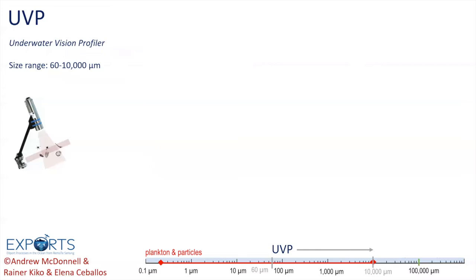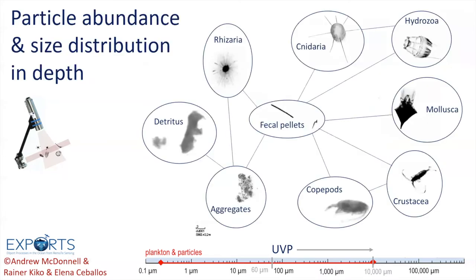Moving to larger particles in our tour, our next technique is a high-resolution underwater camera, the Underwater Vision Profiler, also known as the UVP. This camera counts individual particles larger than 60 micrometers and zooplankton up to 10,000 micrometers, and characterizes the different water masses by their particle content. The UVP can be mounted on a great variety of platforms, which makes this tool very versatile and easy to deploy. During EXPORTS, we collected more than a million images with the UVPs. These images allow us to quantify particle abundance and size distribution with depth, and from those data, estimate the amount of carbon transferred to the deep ocean.